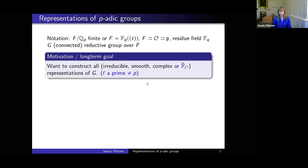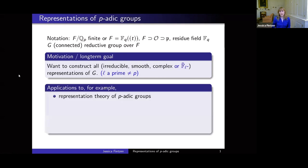Smooth is a condition that gives us a category that's reasonable to study. Our p-adic group G has a topology coming from the p-adic field, and smooth means every vector in our representation space is fixed by an open compact subgroup. These representations are usually infinite-dimensional, but due to the smoothness assumption they behave reasonably. There are many applications: studying restriction to subgroups and distinction, the theta correspondence, writing down character formulas — for all of these one needs to explicitly construct representations.